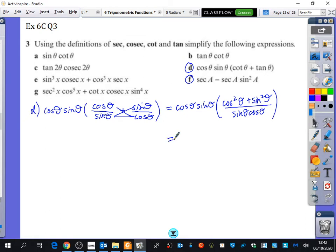What happens here? The cos theta in this bit and down here cancel. The sine theta here and here cancels. And what is cos squared theta plus sine squared theta? It's just one.